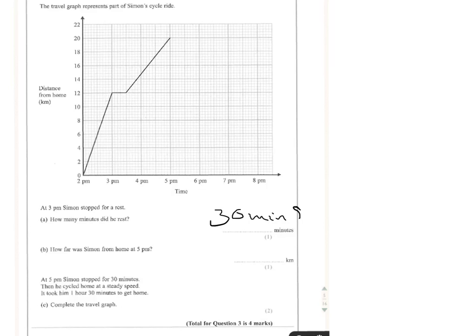So how far was Simon from home at 5pm? So if you go to 5pm, come up to the graph, then come across, it reads off at 20 kilometres. 20 kilometres.